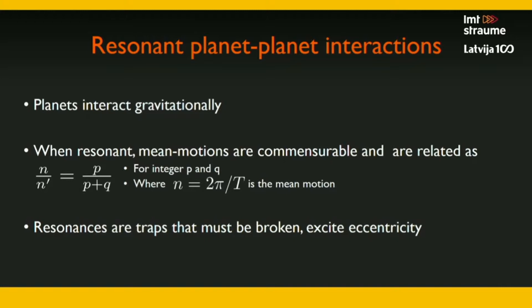This is especially important if you have this convergent migration scenario: a large planet catching up to a smaller planet. At some point you'll definitely reach a point where the periods of these two planets are commensurable, and at that point they get trapped in one of these mean motion resonances. What that then means is we'd expect the planets to stay in this mean motion resonance, and we'd expect to observe them in these resonances today.